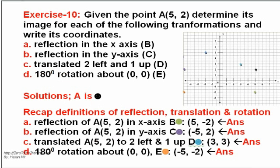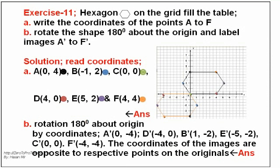Exercise 10: On grid colored points A(5, 2). A: Reflection X axis (5, -2). B: Reflection Y axis (-5, 2). C: Translated 2 left and 1 up (3, 3). D: 180 rotation about origin (-5, -2). Exercise 11: Coordinates A: (0, 4). B: (-1, 2). C: (0, 0). D: (4, 0). E: (5, 2). F: (4, 4). B: C rotation image opposite to respective points A1, B2, C3, D4, E5 and F6.